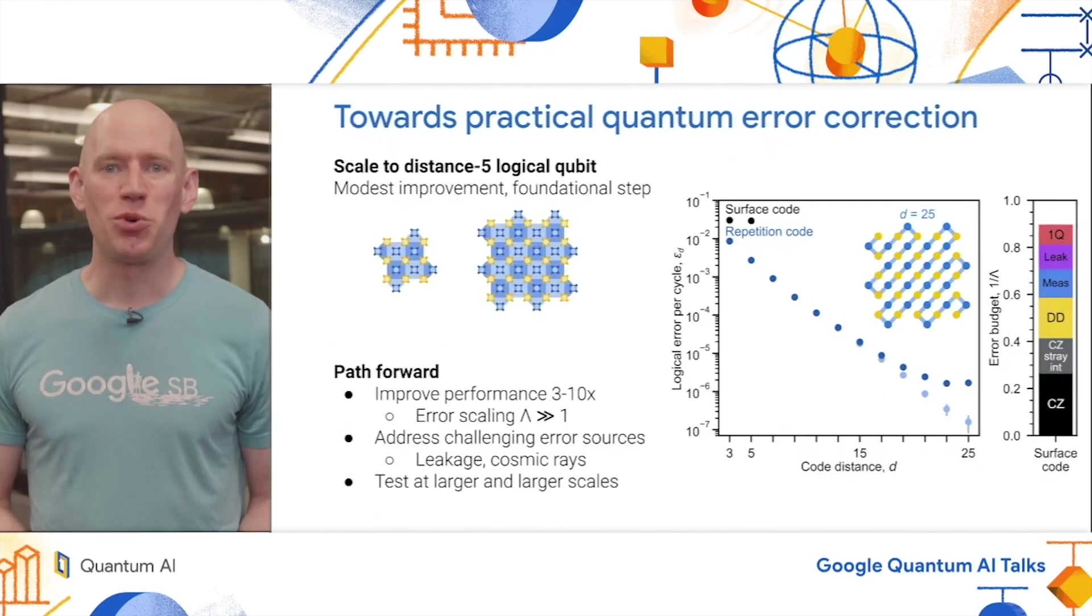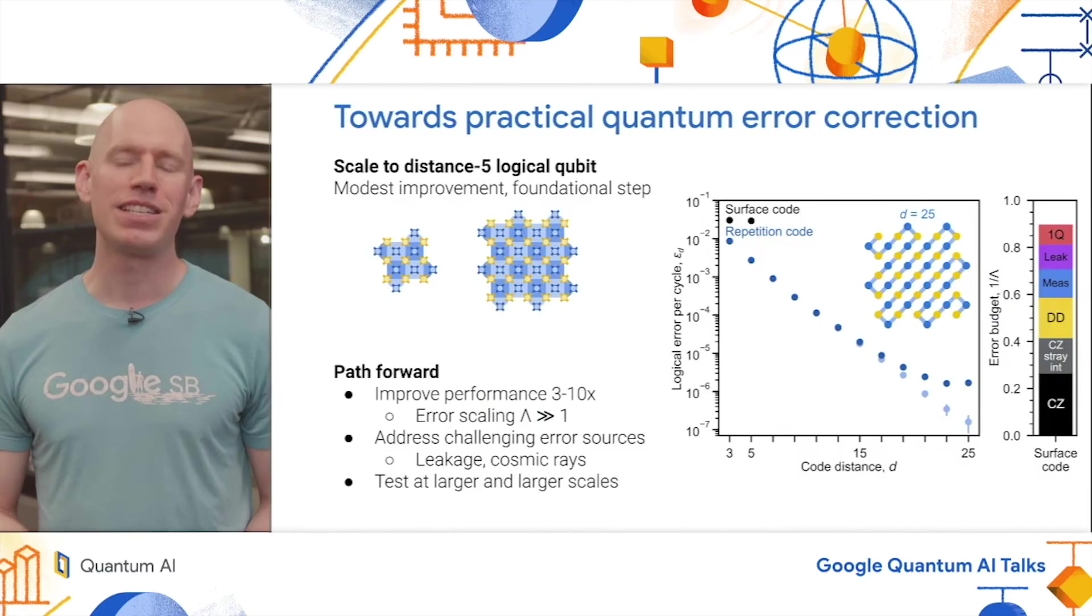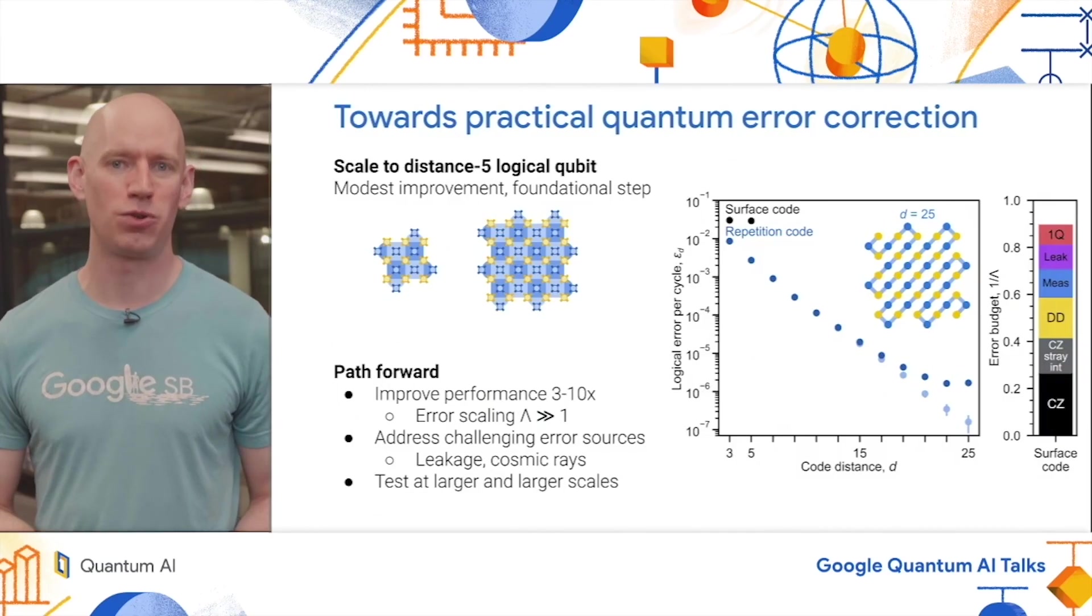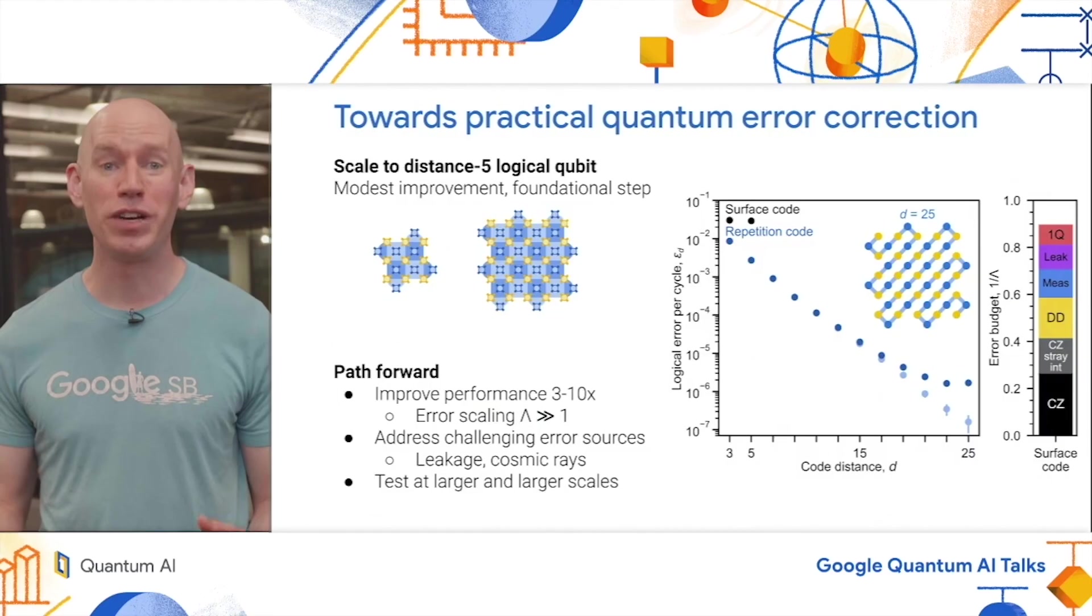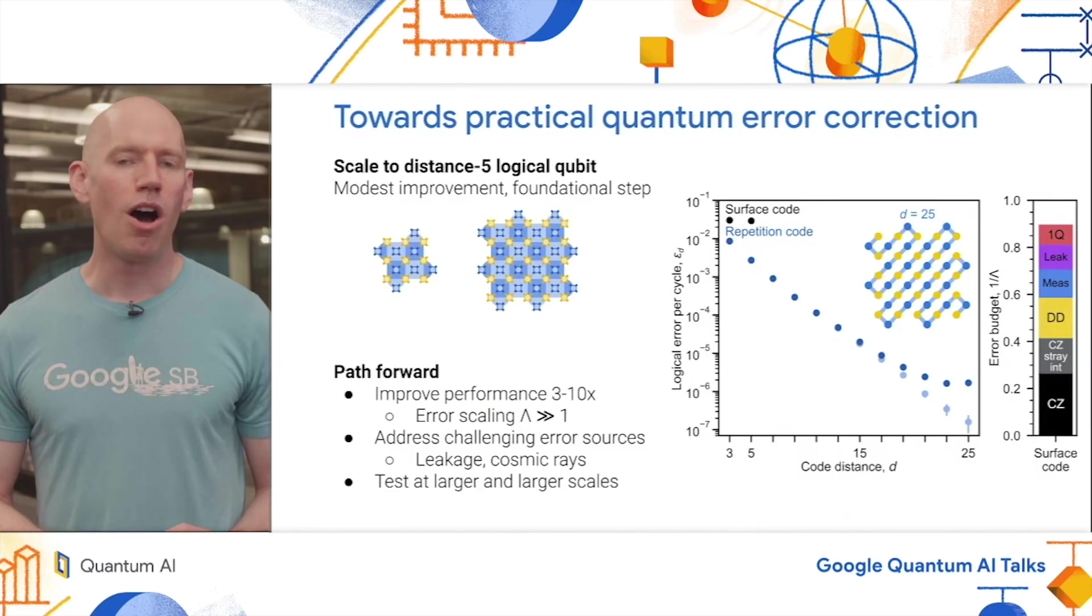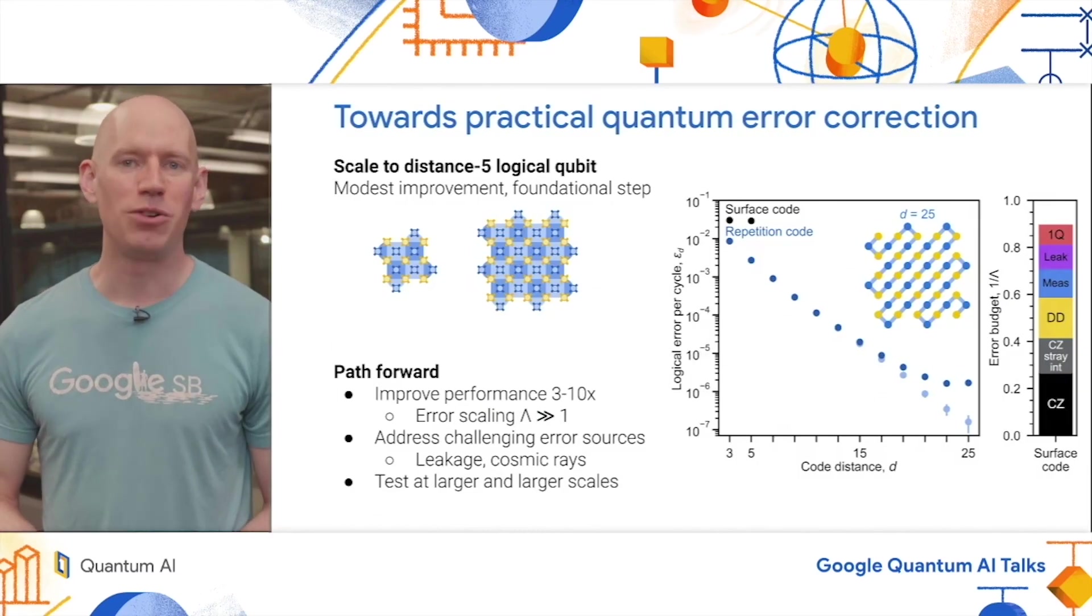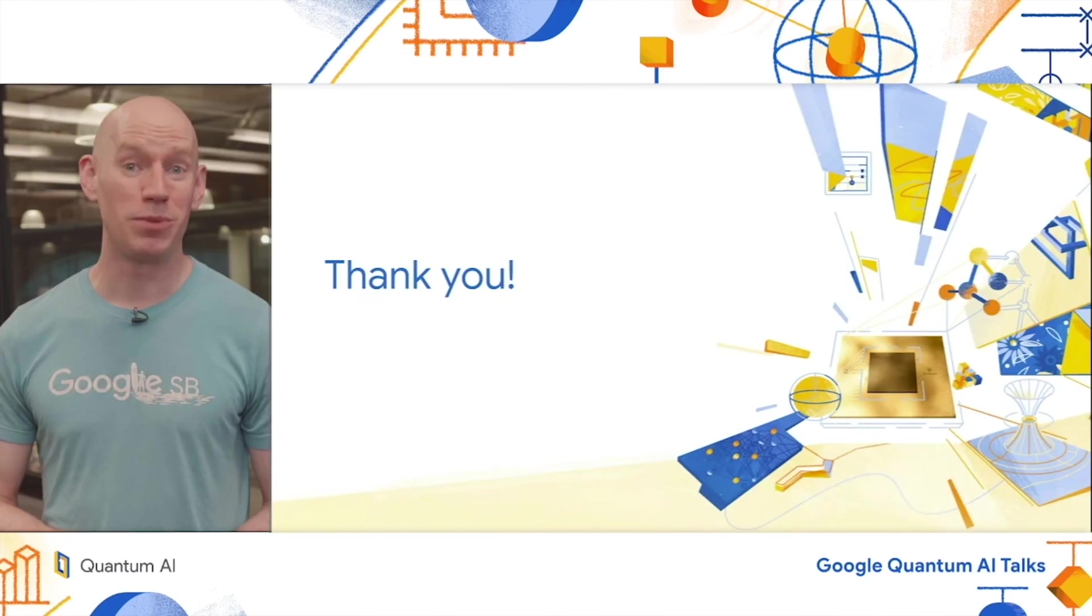Let me conclude by taking a look back towards practical quantum error correction. This experiment that we've done today is comparing a distance 3 to distance 5 surface code and measuring that scaling and seeing that performance is good enough to actually see a modest improvement in logical performance when we add more qubits to the code. But this is only the beginning of the story. We have a long road ahead of us and we want to make our surface code data look a lot more like that repetition code data. This will require significant performance improvements like a factor of 3 to 10 across a wide variety of error mechanisms. We also need to address many challenging error sources such as leakage and cosmic rays that we've discussed here. All the while, it's crucial to test these ideas at larger and larger codes and smaller and smaller logical errors in order to build this bridge to the algorithmic logical performance that we need. Thank you.